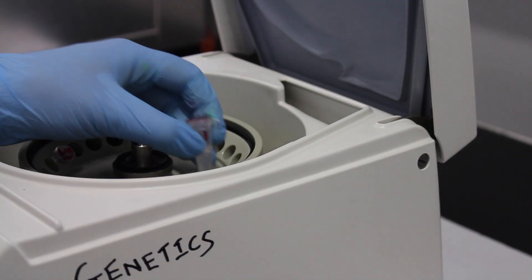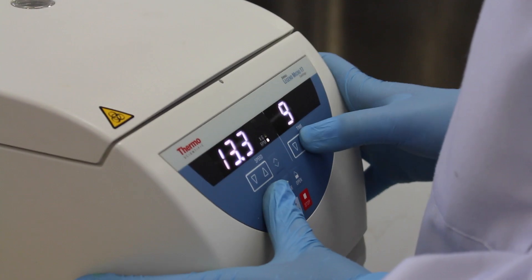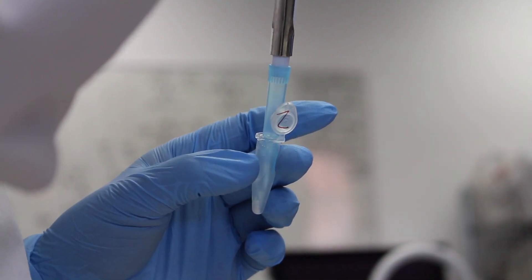The samples are transferred to the centrifuge and centrifuged at top speed for 10 minutes. The pellet contains all the cell debris while the supernatant contains the desired plasmid DNA.